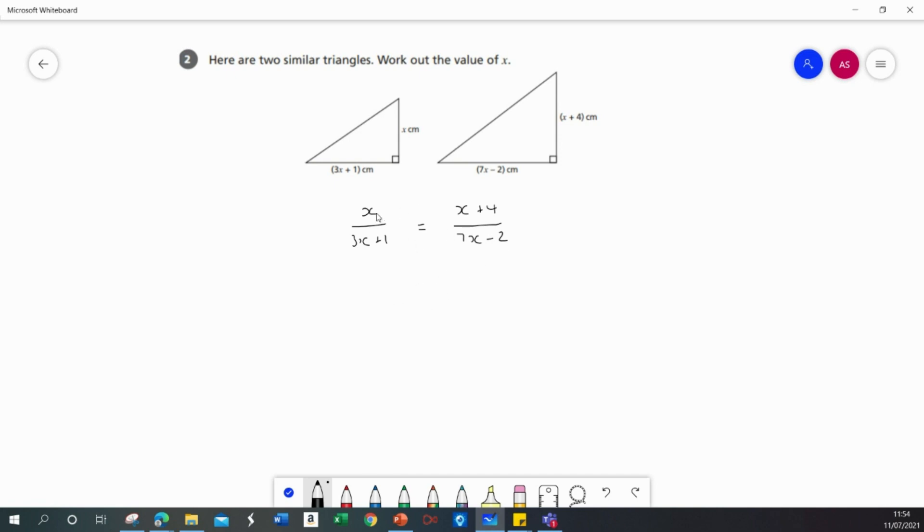In order to solve this first of all I'm going to get rid of these fractions by cross multiplying. So x multiplied by 7x minus 2 equals x plus 4 multiplied by 3x plus 1.